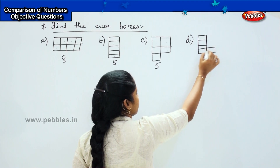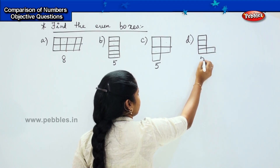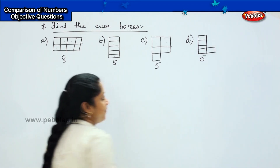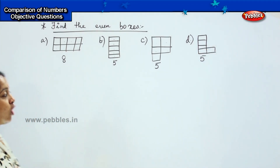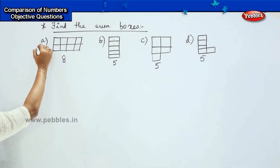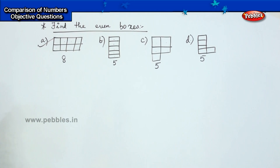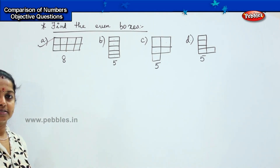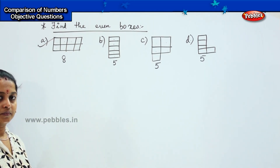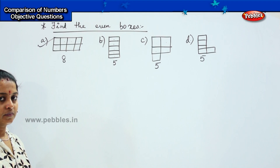1, 2, 3, 4 and 5. So option A — 8 is my right answer, children.